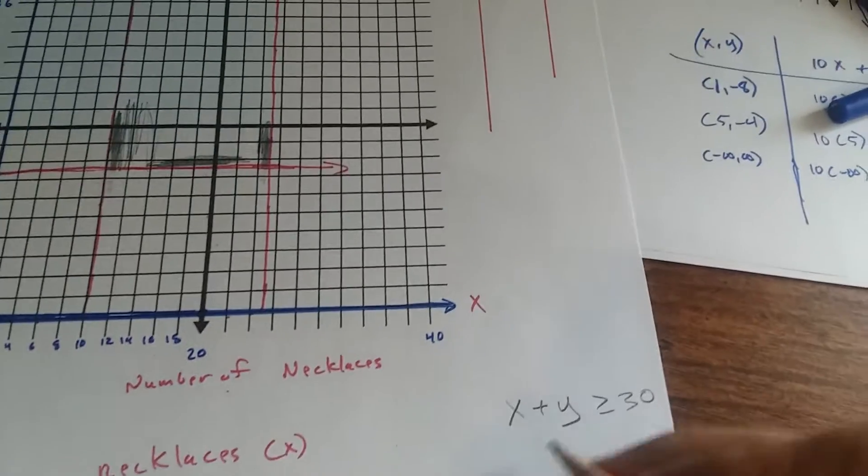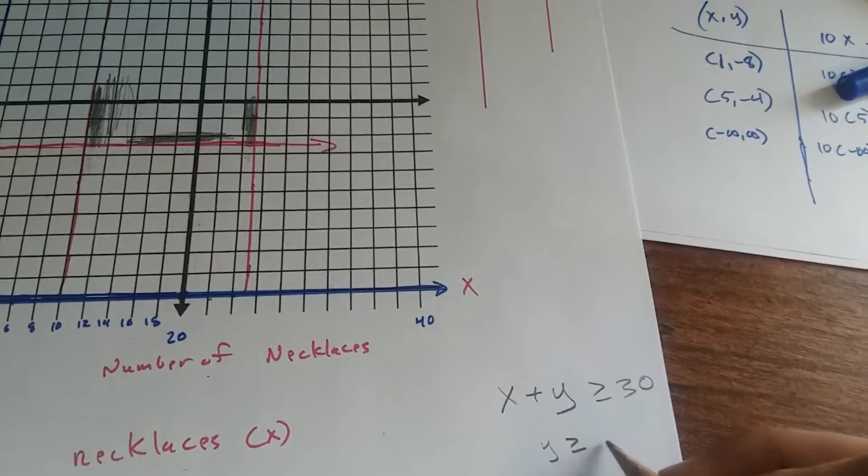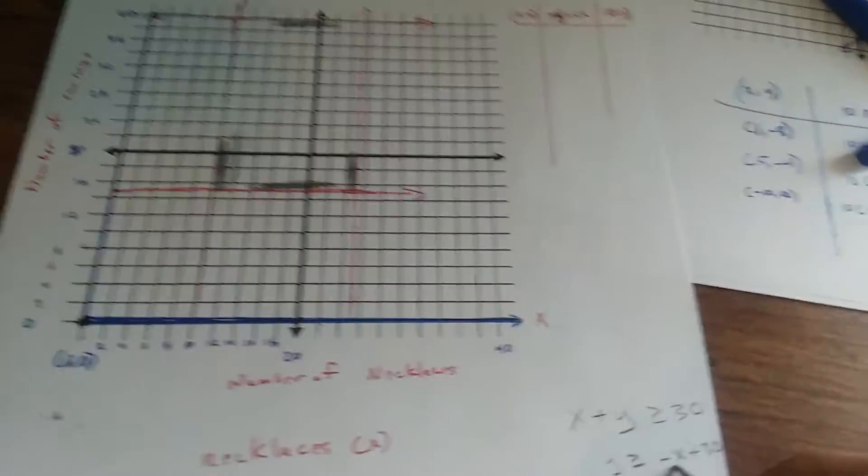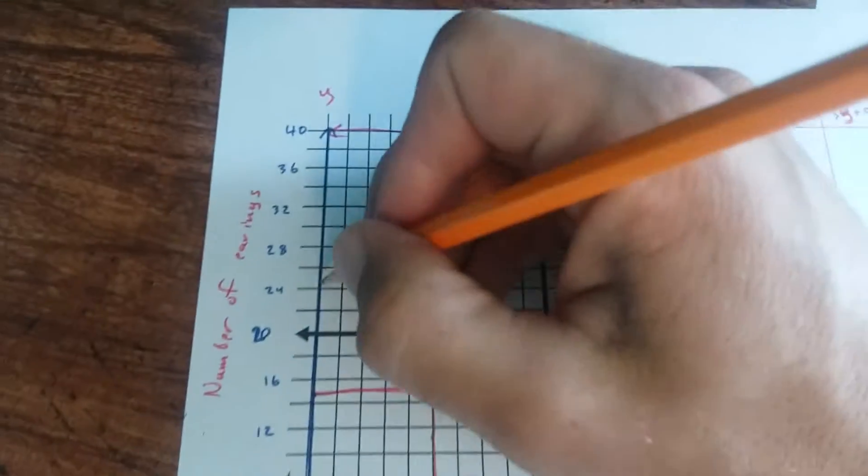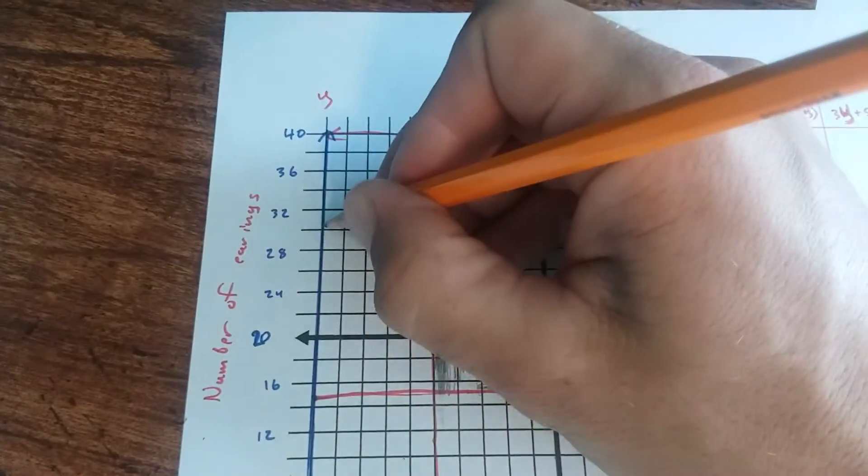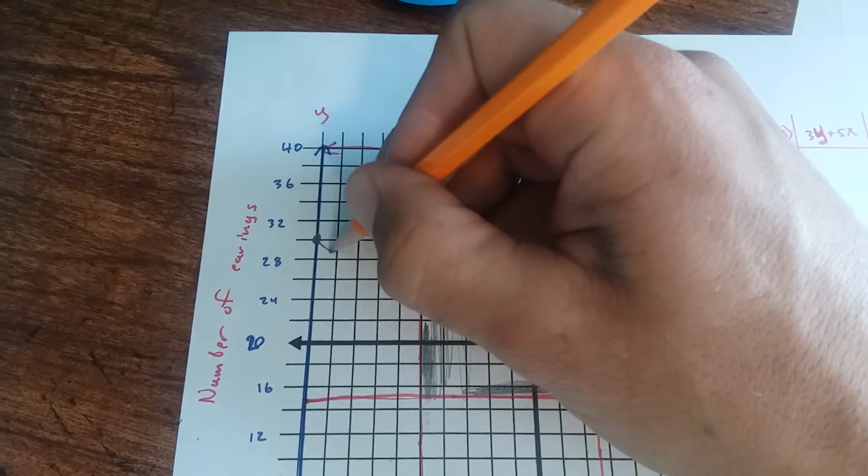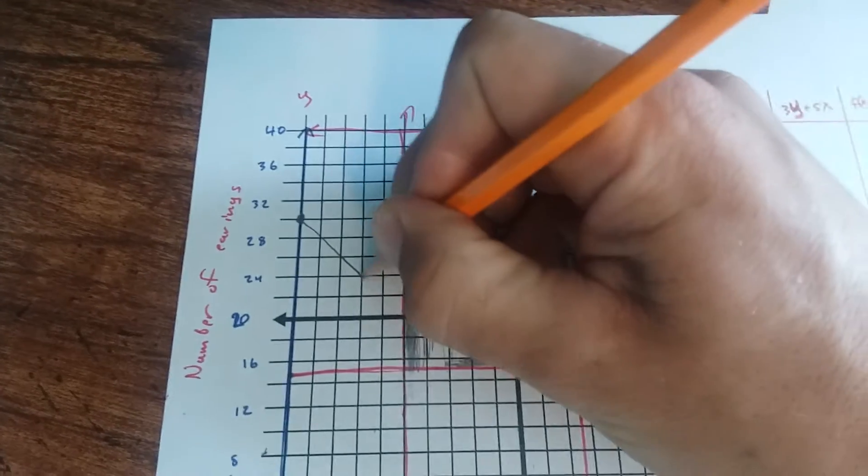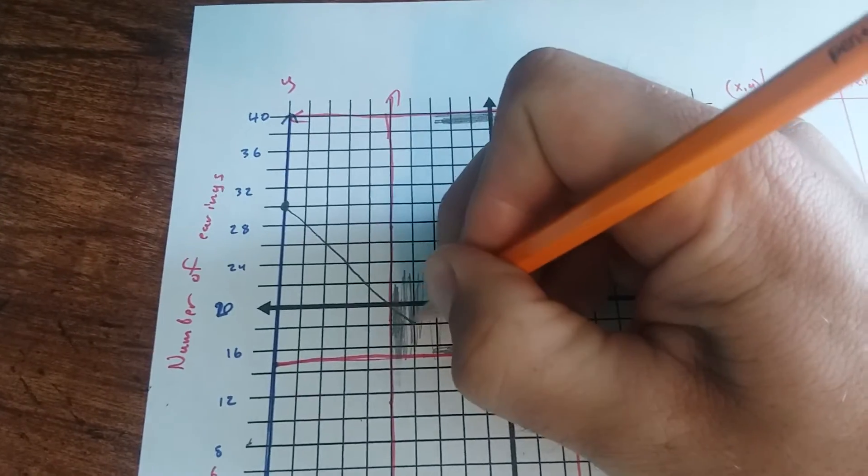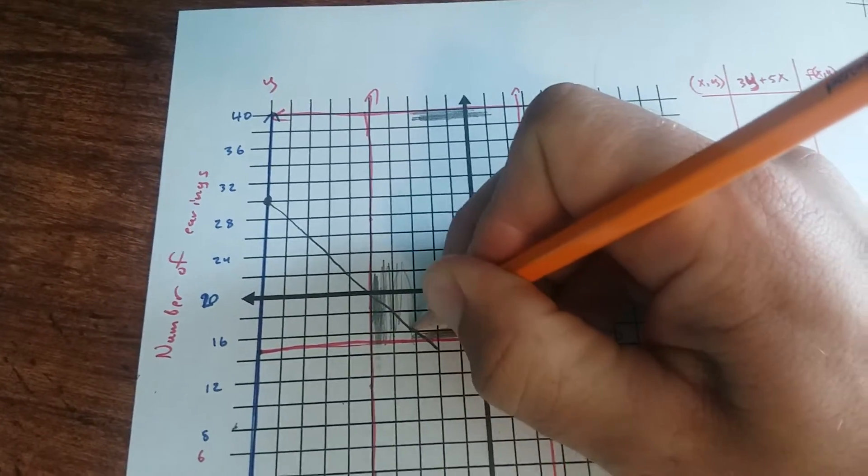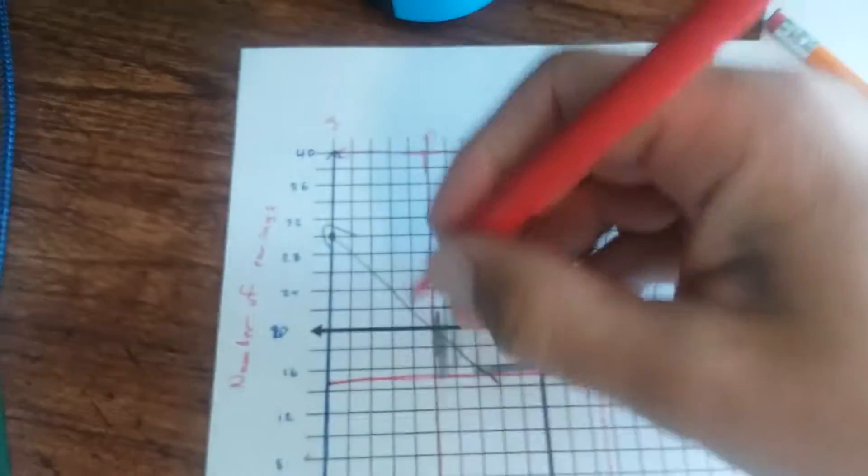So if you solve for Y, Y is greater than or equal to negative X plus 30. Your intercept's 30. Your slope's negative 1. So go to 30. Right here it is. And then you're going to go down one over one each time.